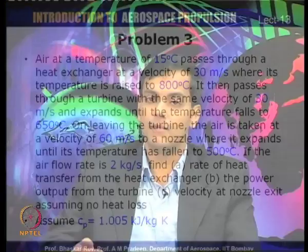The air flow rate is 2 kg/s. Find: (a) rate of heat transfer in the heat exchanger, (b) power output from the turbine, and (c) velocity at the nozzle exit assuming no heat loss. C_p for air is given as 1.005 kJ/kg·K. The system has three components — a heat exchanger, turbine, and nozzle — all steady flow devices.